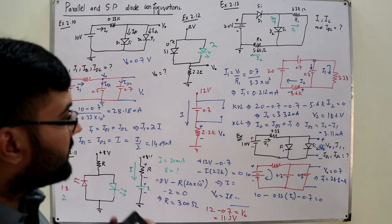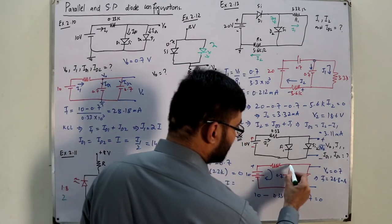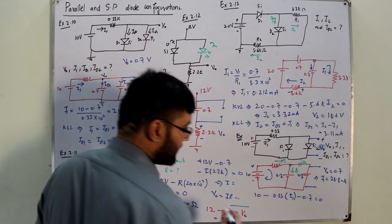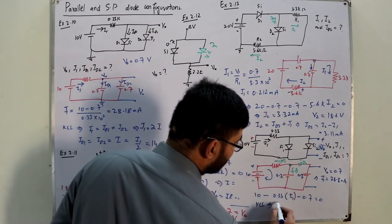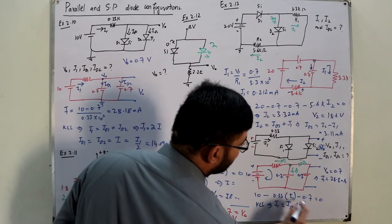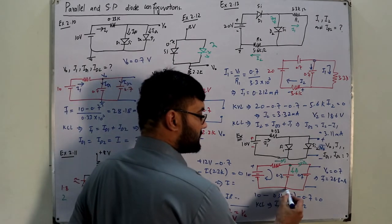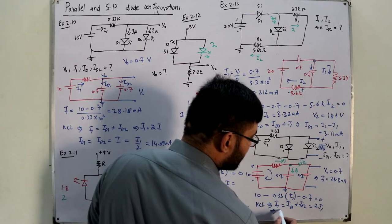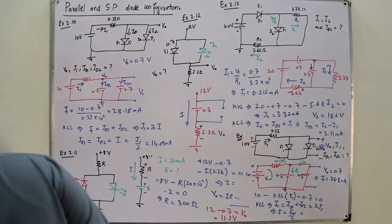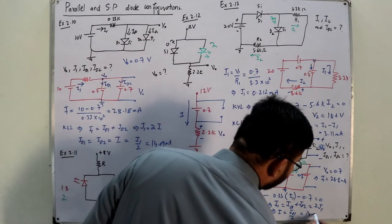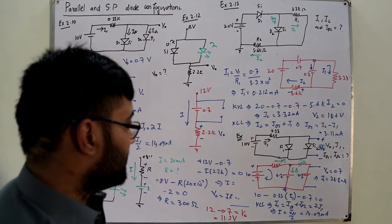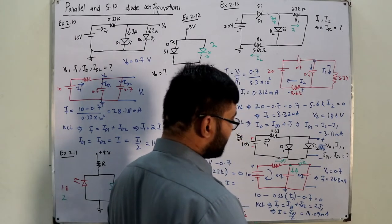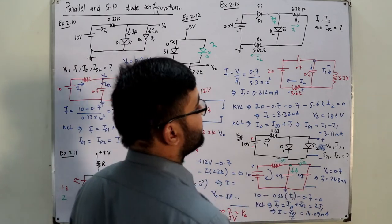ID1 and ID2 are unknown. Applying KCL at the node: i₁ = ID1 + ID2. Since both diodes have the same potential difference and no resistive or inductive elements differ between branches, ID1 = ID2 = I. So i₁ = 2I, giving ID1 = ID2 = i₁/2 = 14.09 milli-amperes flowing in each branch.